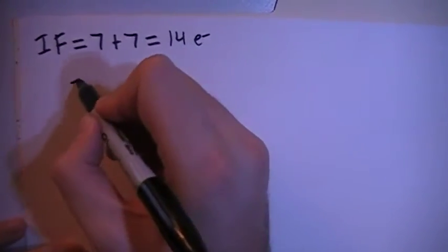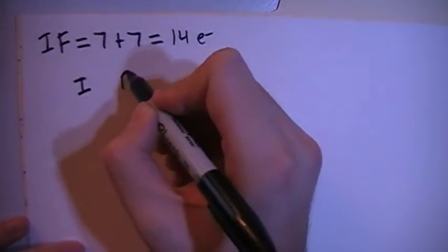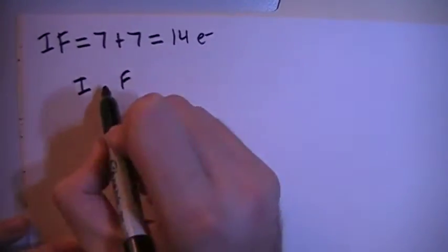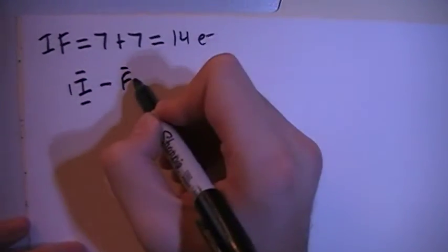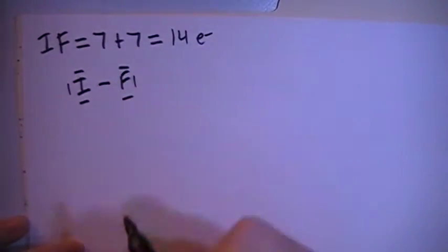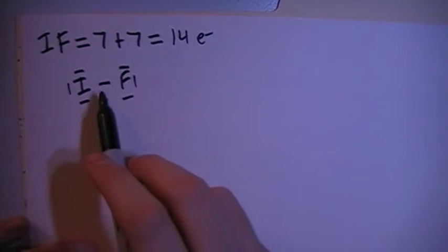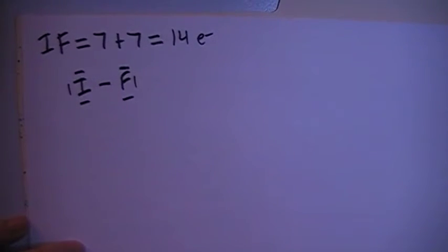So this one is pretty straightforward. We have the iodine here, fluorine here. We can start by single bonding them and then filling in the octets for each of the two atoms. And if you add up all those electrons you have 2, 4, 6, 8, 10, 12, 14, which is our total.